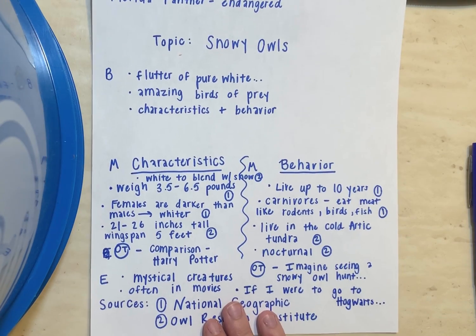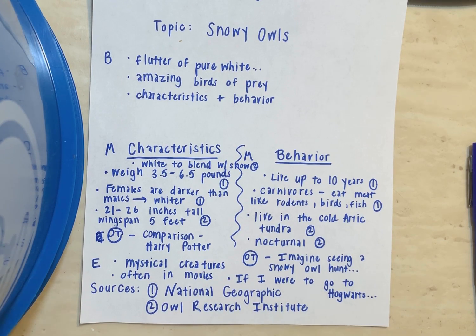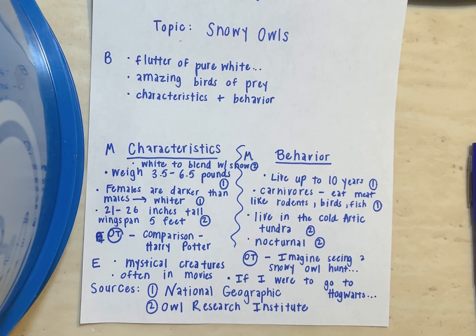And there we go, boys and girls — that is my completed plan. Make sure you have your beginning, two middles, and an ending. In your middles, use your evidence and your original thought. In your beginning, introduce the topic and get the reader's attention. At the end, wrap it up and leave the reader with something to think about. Please do not forget your sources. If you have any questions, send me a message on Remind or call me on Zoom. I'll be back tomorrow to show you how to write a beginning. Bye!